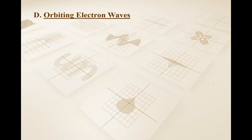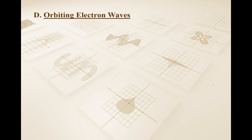Now, because de Broglie suggested that an electron has a wave-like property, we have to modify our model of the atom. In our previous model, we talked about electrons in stationary states. So now we need a revised model that accounts for the wavelength of an electron.